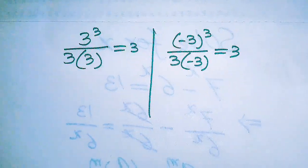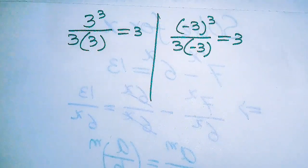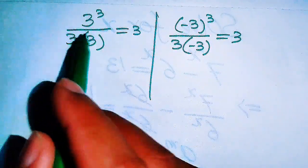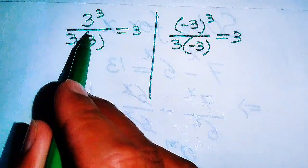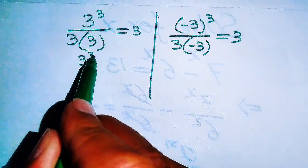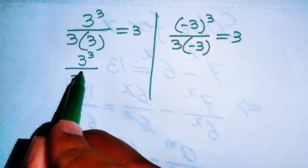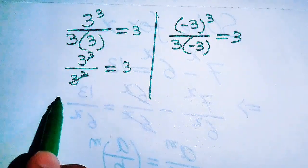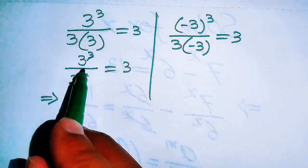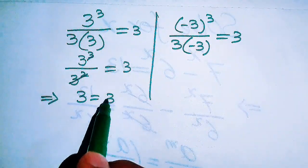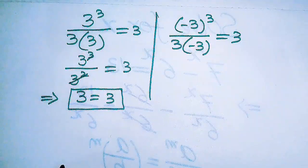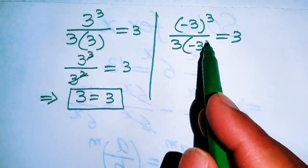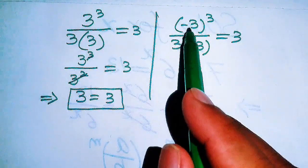For the second case we put m equals to minus 3, giving minus 3 cubed divided by 3 times minus 3 equals to 3 or not. Now verifying the first side: 3 times 3 becomes 9, so we have 3 cubed divided by 3 squared. The 3 squared cancels with part of 3 cubed, leaving 3 in the numerator equals to 3.